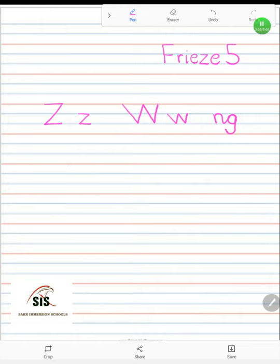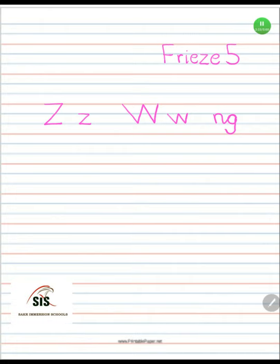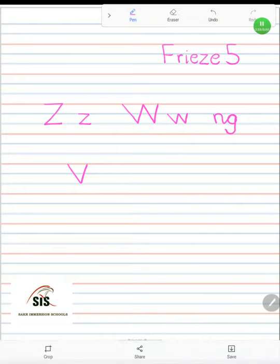Start with line number one — sloping line down, sloping line up. How are we going to write the small one? Between the two lines in the middle, I will write the digraph.